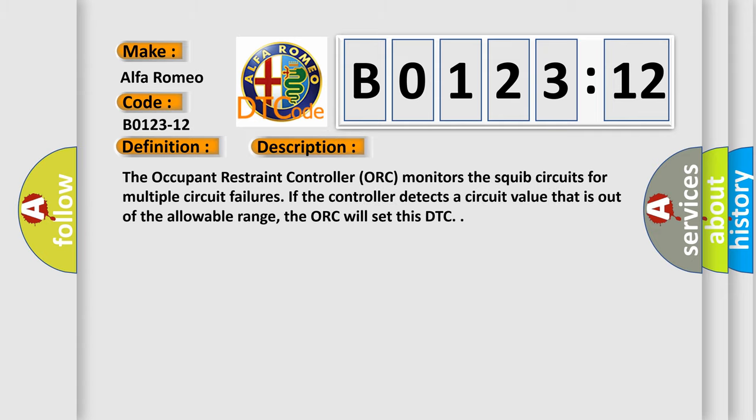And now this is a short description of this DTC code. The occupant restraint controller ORC monitors the squib circuits for multiple circuit failures. If the controller detects a circuit value that is out of the allowable range, the ORC will set this DTC.